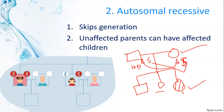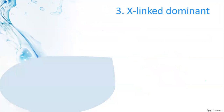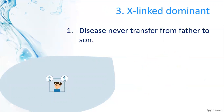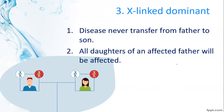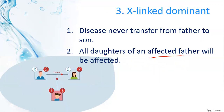The third type is X-linked dominant inheritance. The first rule of X-linked dominant is that the disease is never transferred from father to son. In X-linked dominant, the transfer goes from father to daughter and from mother to son. All daughters of an affected father will be affected.